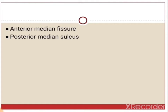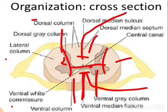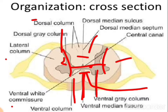The anterior median fissure is a deep cleft on the anterior side of the spinal cord. On the posterior side there is also a cleft, which is not as deep, known as the dorsal median sulcus.